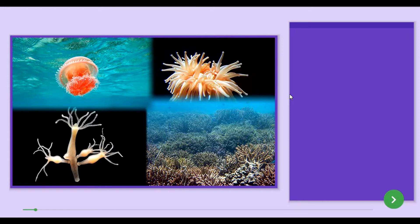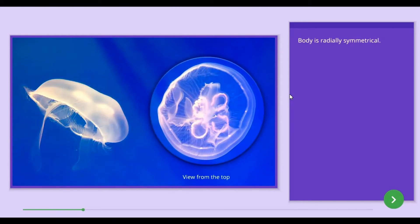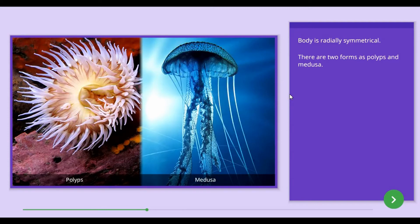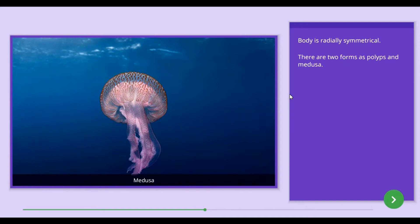The common features of animals in the Cnidaria group are as follows. Cnidarian body shows radial symmetry, which means the body can be divided into two similar halves by passing a plane at any central axis through the center of the body. There are two forms in Cnidarians: polyps, which are fixed to a substrate and lead a sedentary life, and Medusa, which are free-swimming organisms.